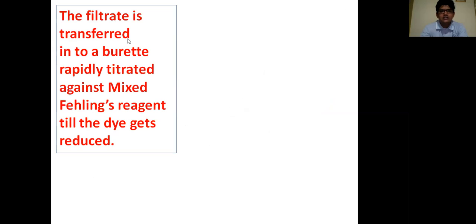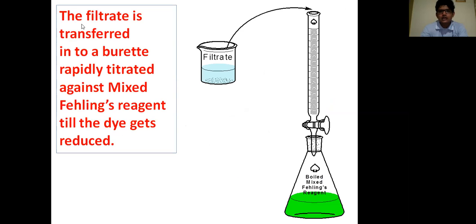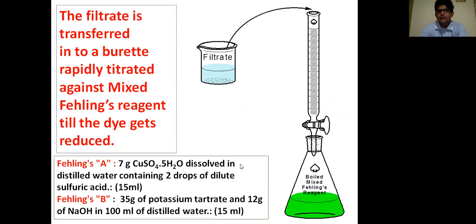The filtrate is transferred into a burette and rapidly titrated against mixed Fehling reagent till the dye gets reduced. Here we can see the filtrate is transferred into the burette and then it is titrated rapidly with the boiled mixed Fehling reagent. Here it is shown how to prepare the mixed Fehling reagent. First prepare Fehling A, then prepare Fehling B, and mix it together and boil it and use for the titration.